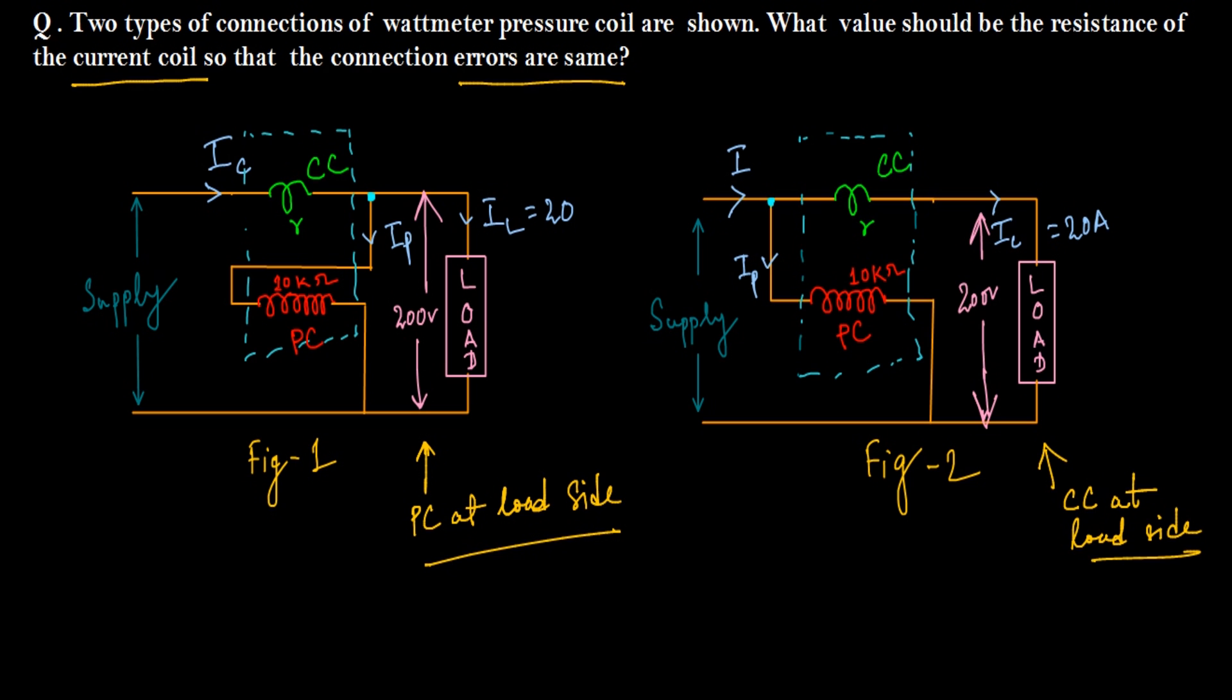For these different types of connections, the amount of errors are different. So here our objective is to find the value of the resistance of current coil in both connections so that we get same error for both power measurement readings.